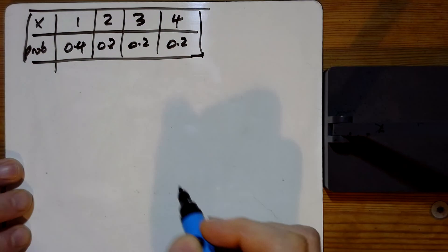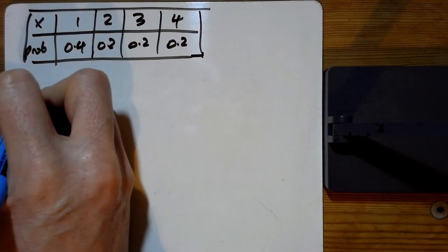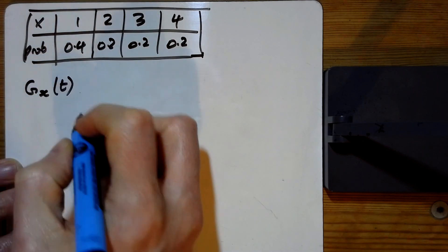We're asked to write this rather than as a table like you might have done in the first year, but as the generating function. So this is generating function for x with the dummy variable t.